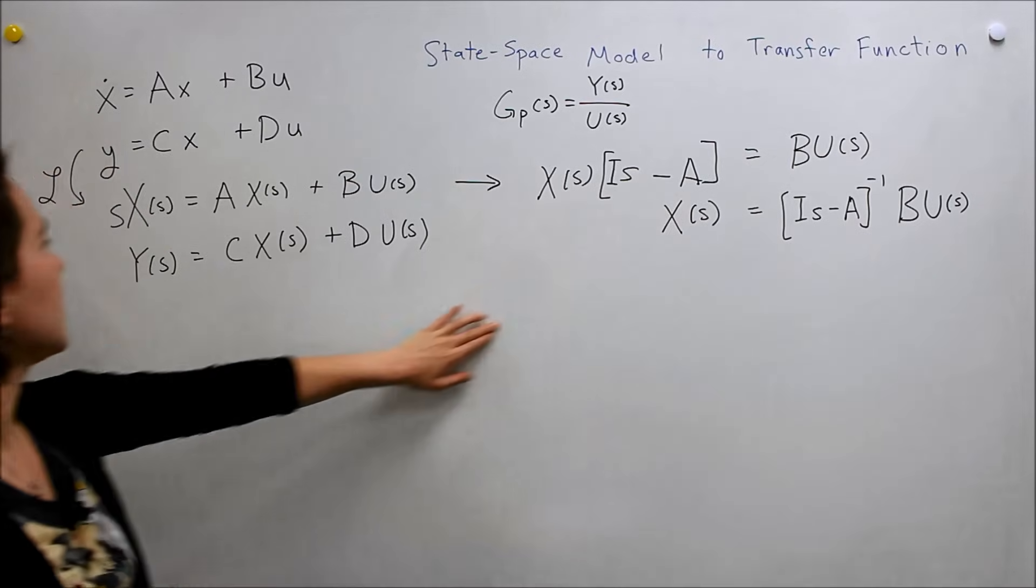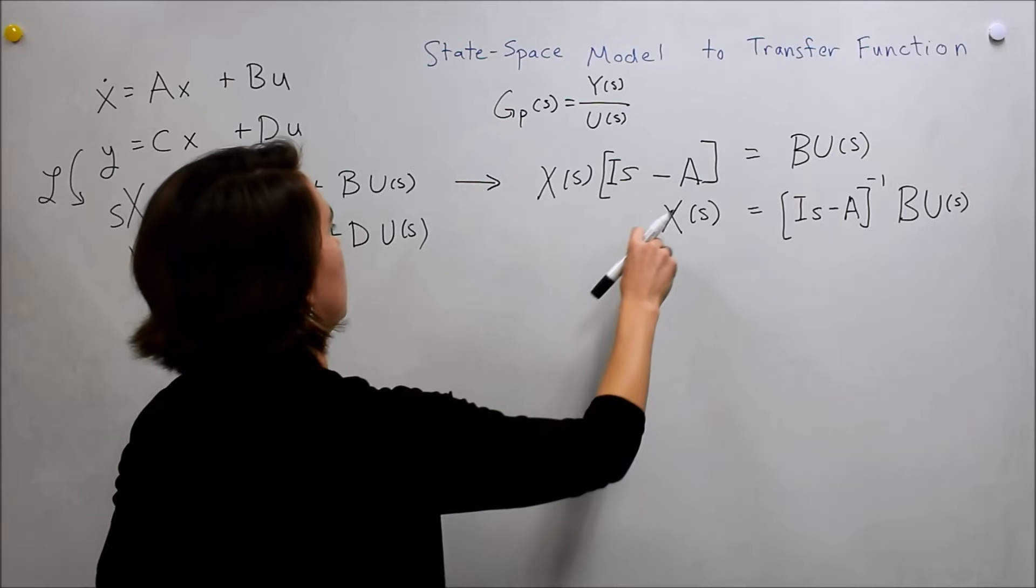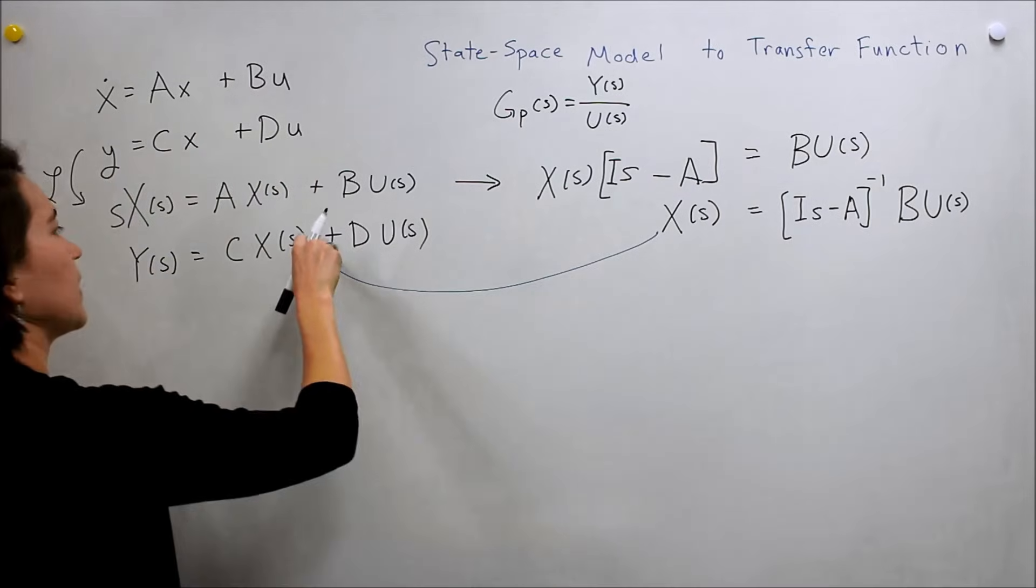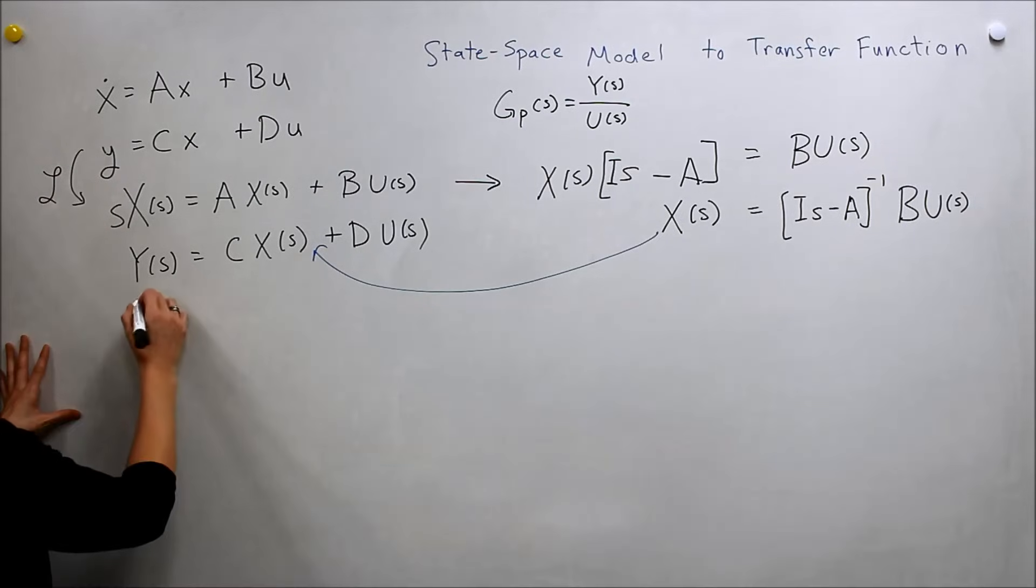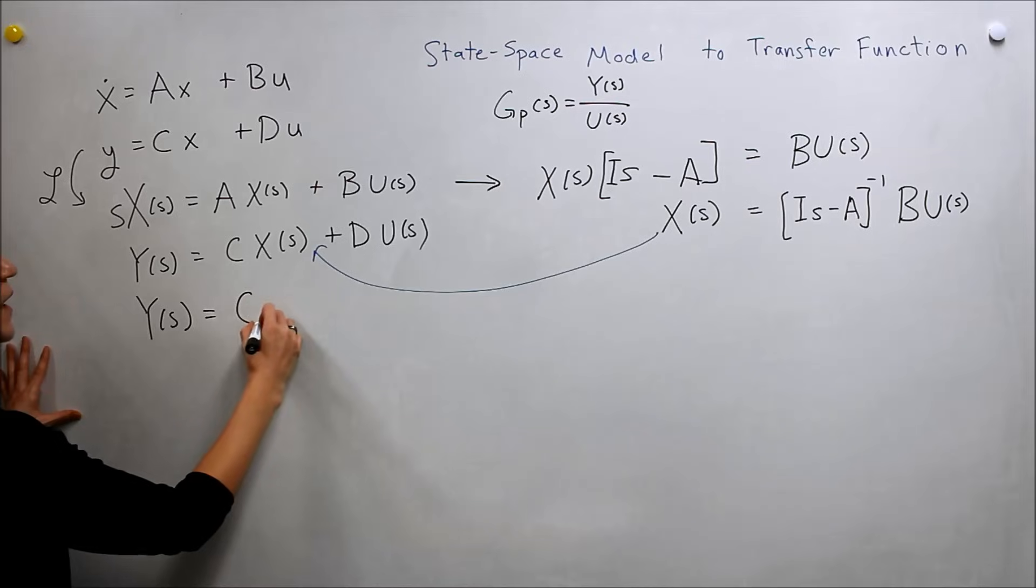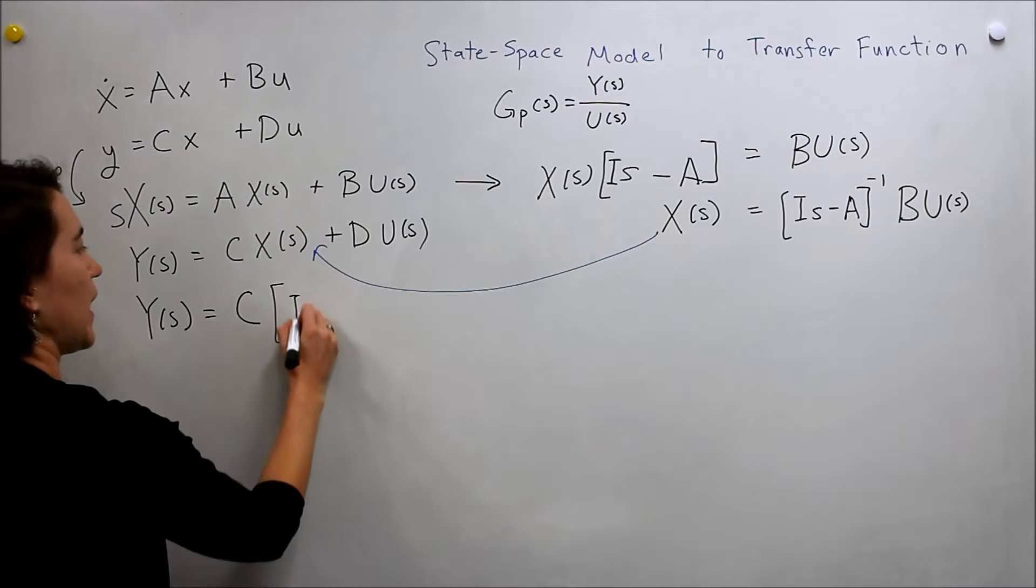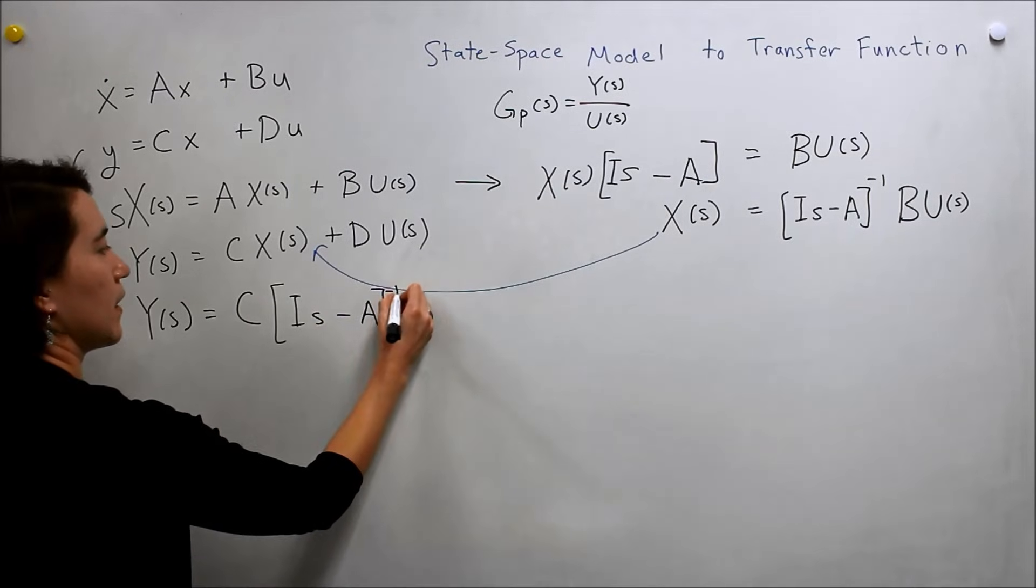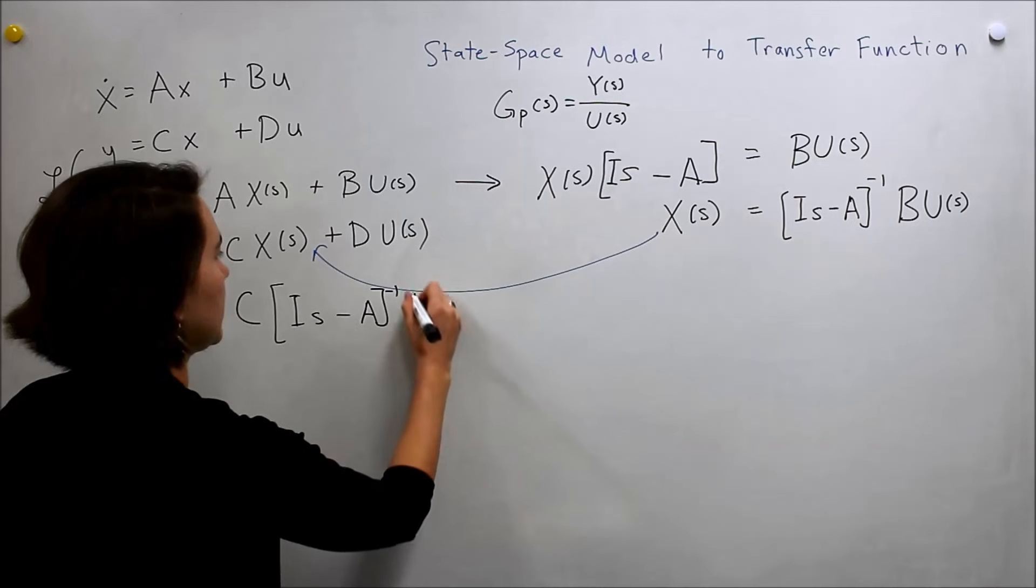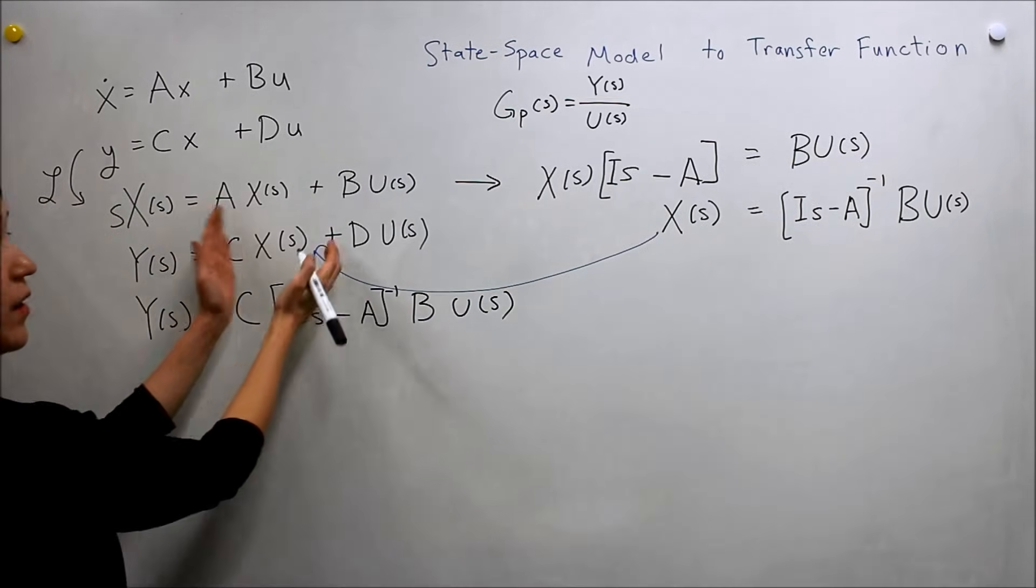Well, now we can take that and put it into this equation. So put this right here, replace it there, so that we can get rid of our x. And then we'll get y of s here equals c times this part. So the inverse of i s minus a, negative one inverse, times b, u of s. That was this whole quantity.